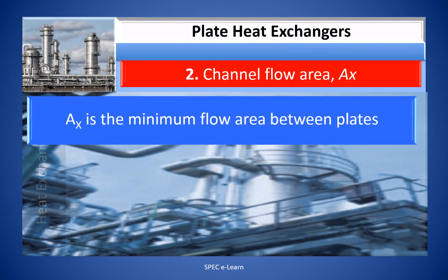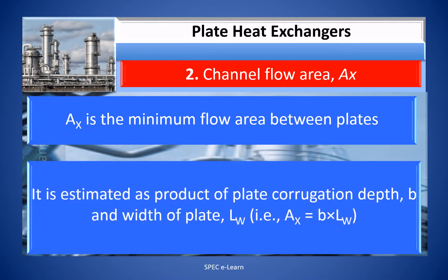Channel flow area AX is the minimum flow area between the plates. It is estimated as the product of the plate corrugation depth B and the width of the plate LW.